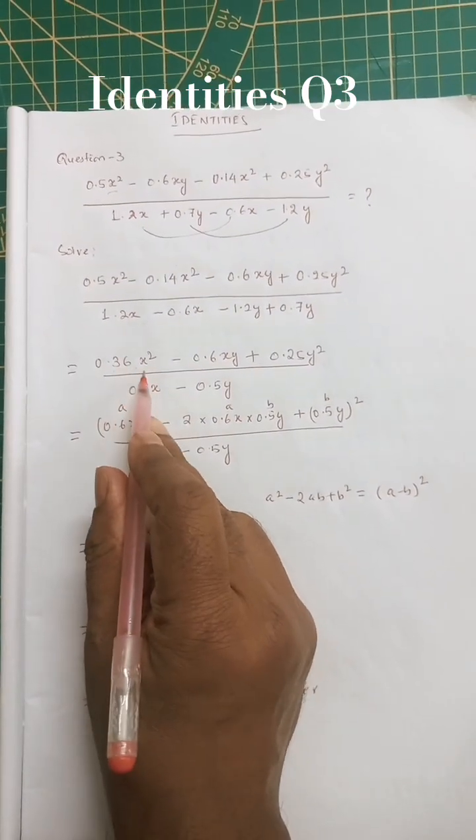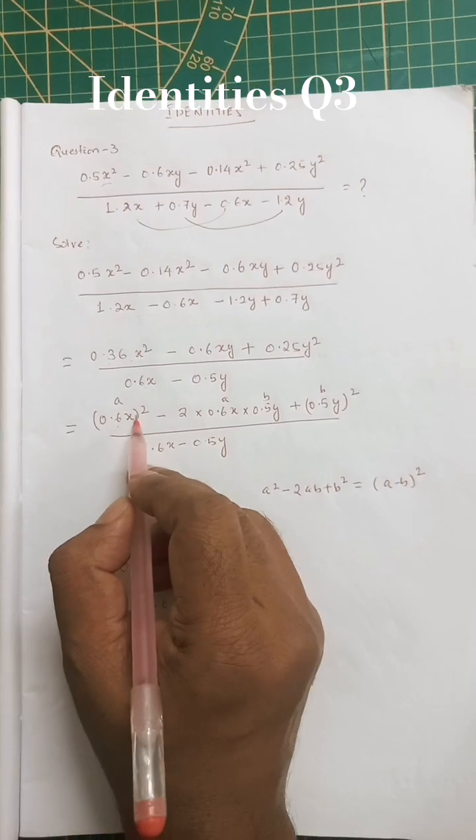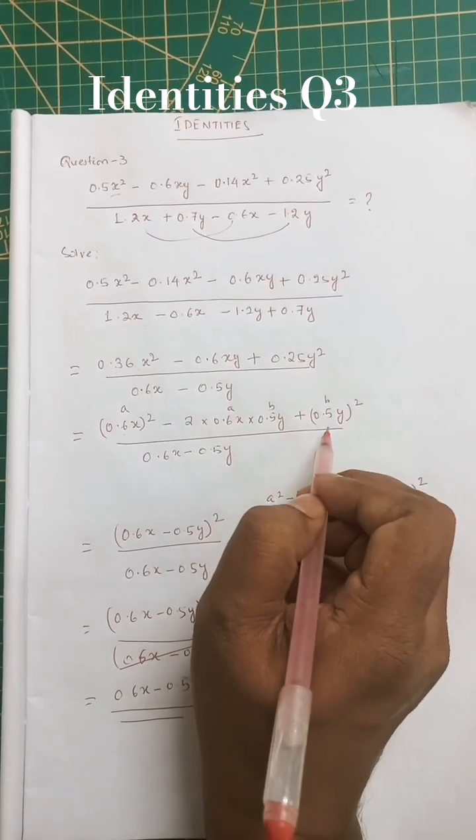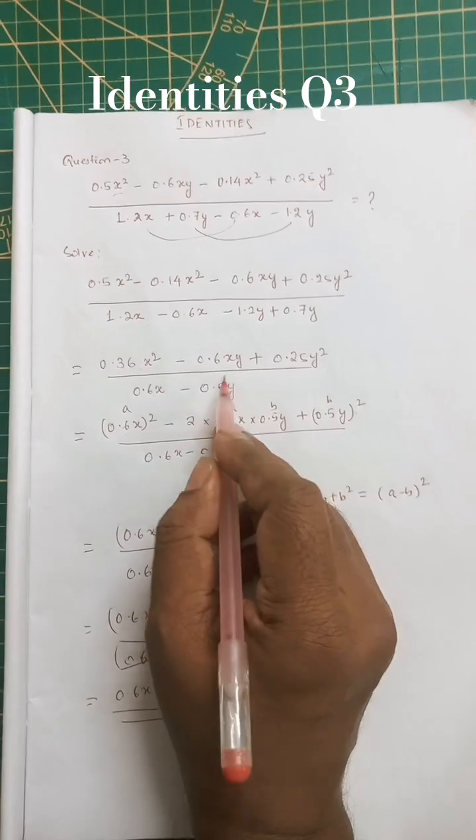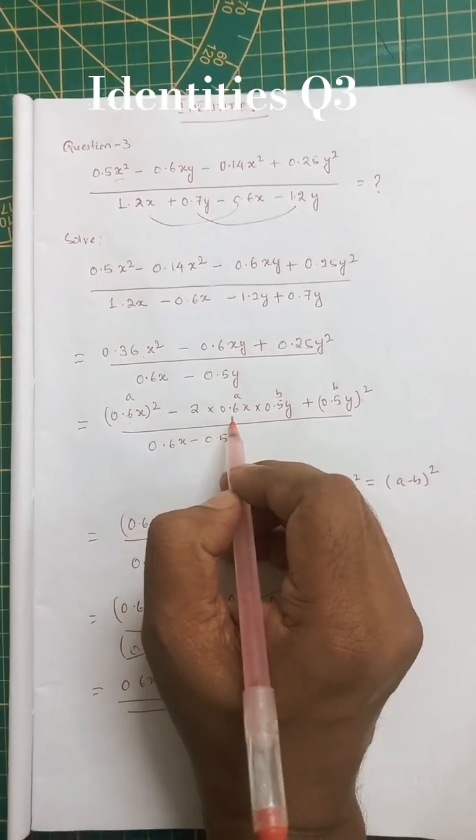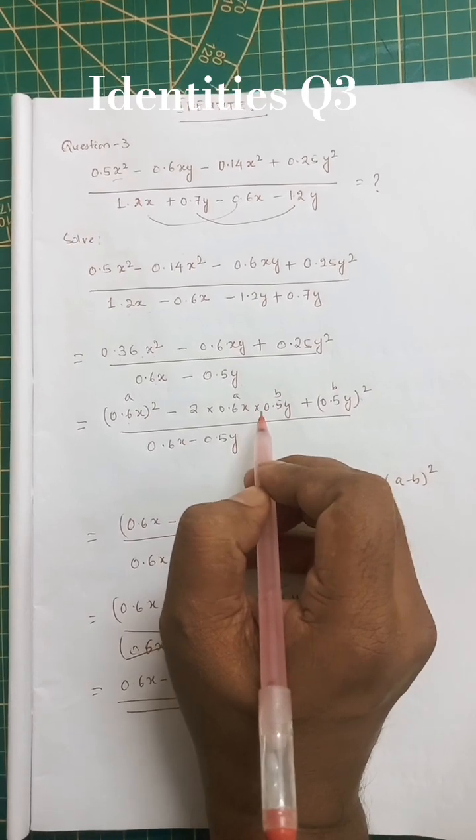After that, 0.36 x squared equals 0.6 x whole squared, and 0.25 y whole squared equals 0.5 y whole squared. At the center, the middle power we can write as 2 into 0.6 x into 0.5 y.